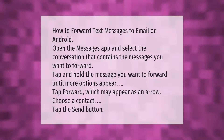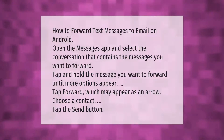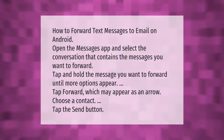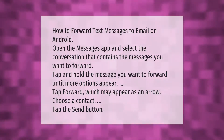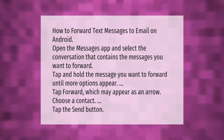To forward text messages to email on Android: open the Messages app and select the conversation that contains the messages you want to forward. Tap and hold the message until more options appear, tap 'Forward' (which may appear as an arrow), choose the contact, and tap the send button.